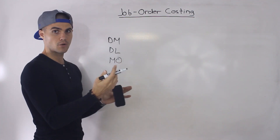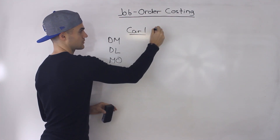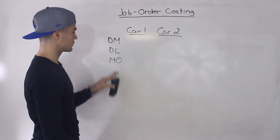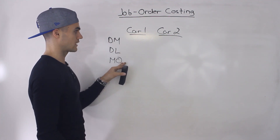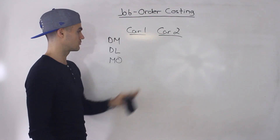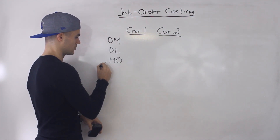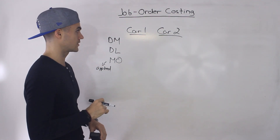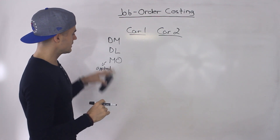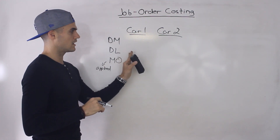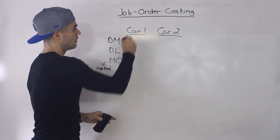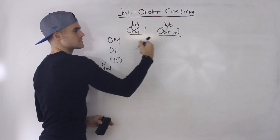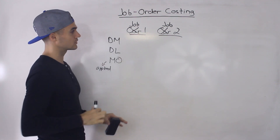We talked about the car manufacturer where we had two types of cars — car one and car two, like a lower end car and a higher end car. The direct material, direct labor, and manufacturing overhead was different for each product. And that manufacturing overhead was applied by a certain cost driver. Now, instead of looking at these three product costs per product, you can also look at them per job — and that's what job order costing is.